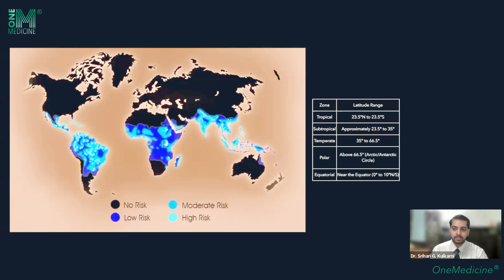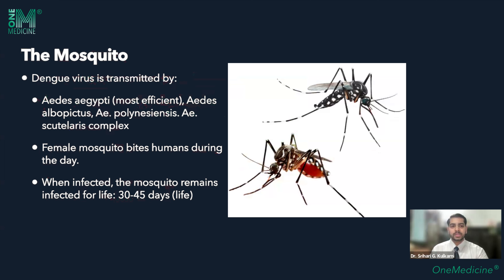Lately we have been seeing cases in England as well, which is quite notable because dengue appears to be spreading from tropical to other regions. The dengue virus is transmitted by Aedes aegypti, which is the most commonly cited vector, but others include Aedes albopictus, Aedes polynesiensis, and the scutellaris complex. The female Aedes mosquito bites during the day.